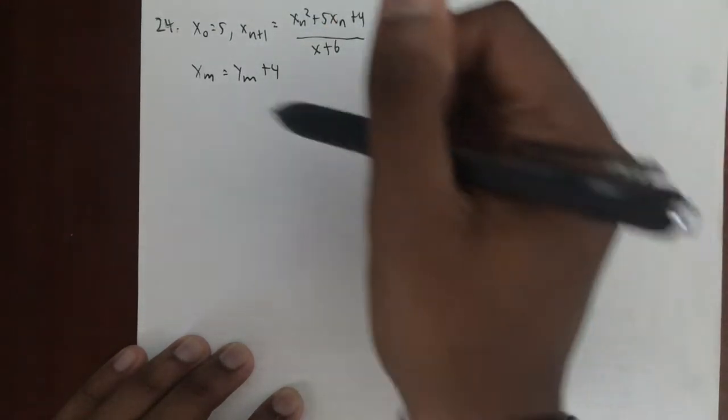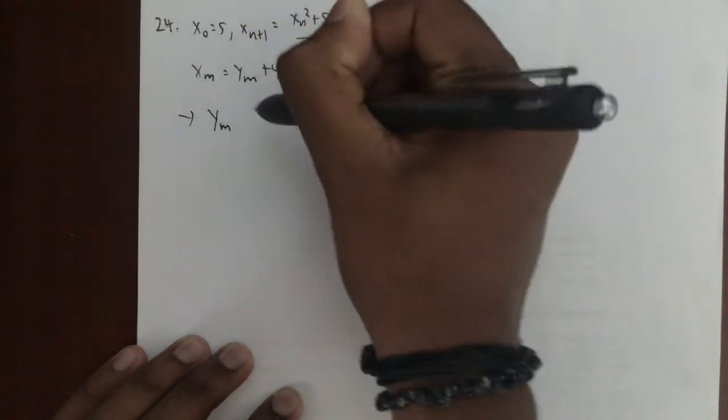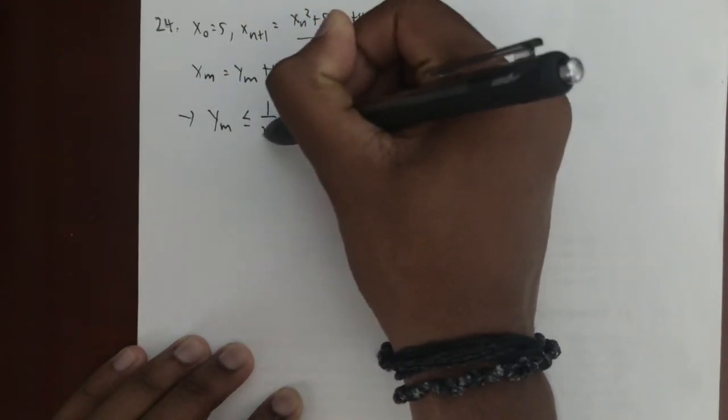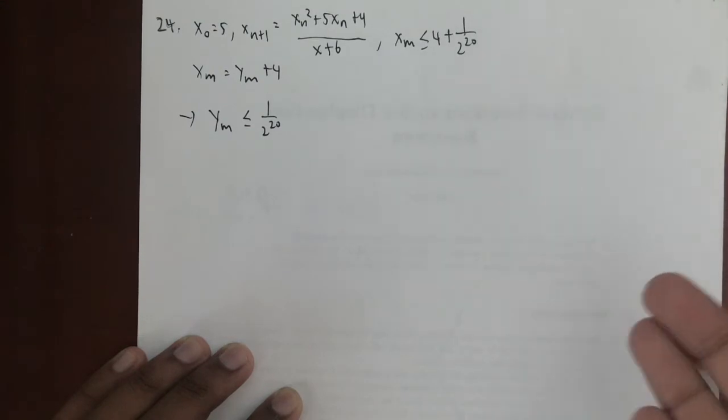What this tells us is now we're trying to find an m value such that y_m ≤ 1/2^20. Obviously this doesn't make anything more obvious, but it just makes the expression look so much nicer and it will actually help us solve it down the road.